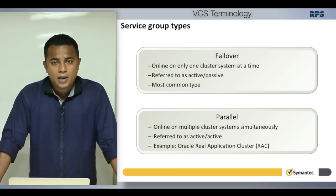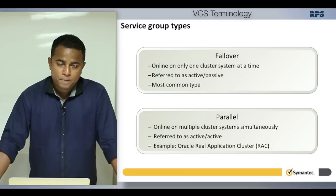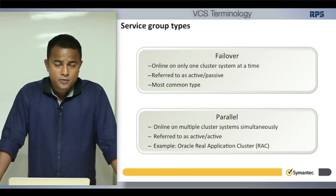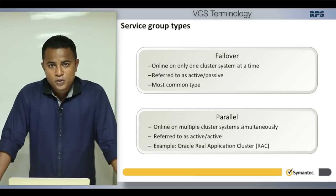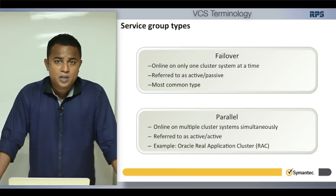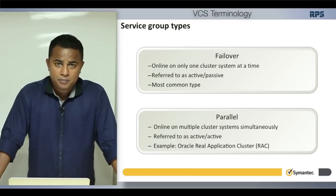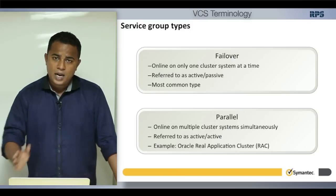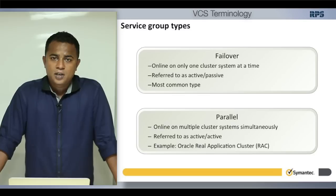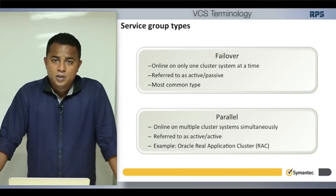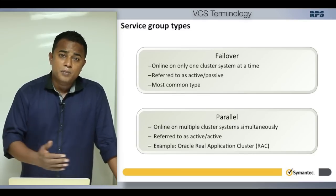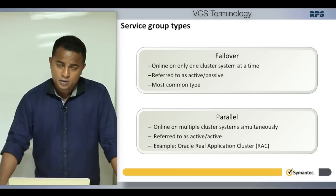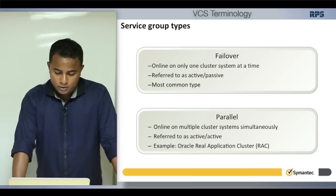A parallel service group means your service group runs on more than one machine at any point in time — it's also called active/active. You have the same service running on multiple machines, which offers load balancing features so processing can be done by multiple machines in parallel.